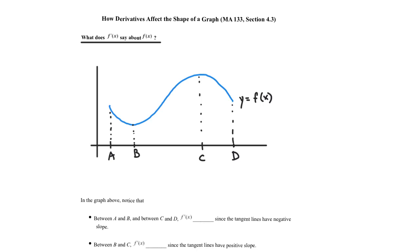Looking at the picture, between A and B and between C and D, the derivative f prime of x is less than 0, since the tangent lines have negative slope. If you consider the tangent lines in these spots, all of them have negative slopes between A and B, and the same thing between C and D — the tangents to this curve have negative slope, which means the derivatives are negative.